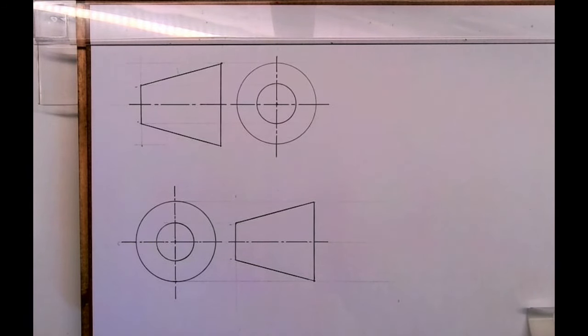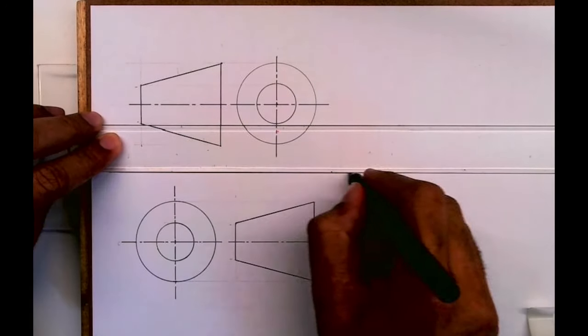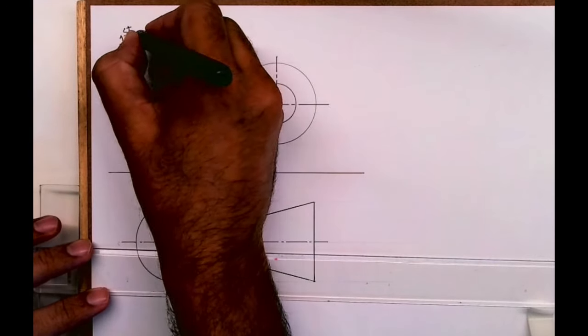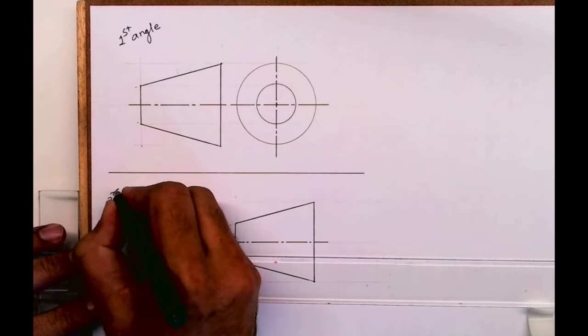Welcome to technical drawing. Today we'll see the difference between first angle and third angle projection symbols. Many times you have seen this is first angle method of projection symbol, the above one, and the lower one is third angle method of projection symbol.